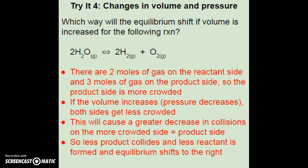Which way will the equilibrium shift if the volume is increased for the following reaction? First, check that everything is a gas, then count total moles: two moles of gas on the reactant side and three moles on the product side. The product side is the more crowded side. If the volume increases, pressure decreases, both sides get less crowded, but there will be a greater decrease in collisions on the more crowded product side. So less product collides, less reactant forms, and the equilibrium shifts to the right.